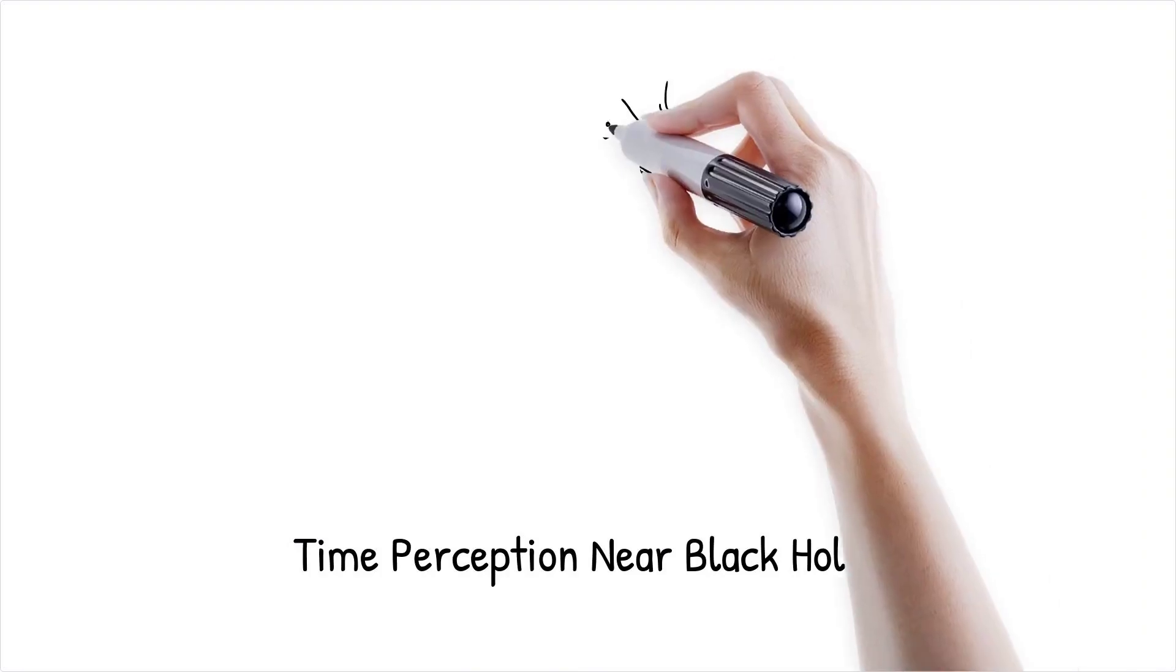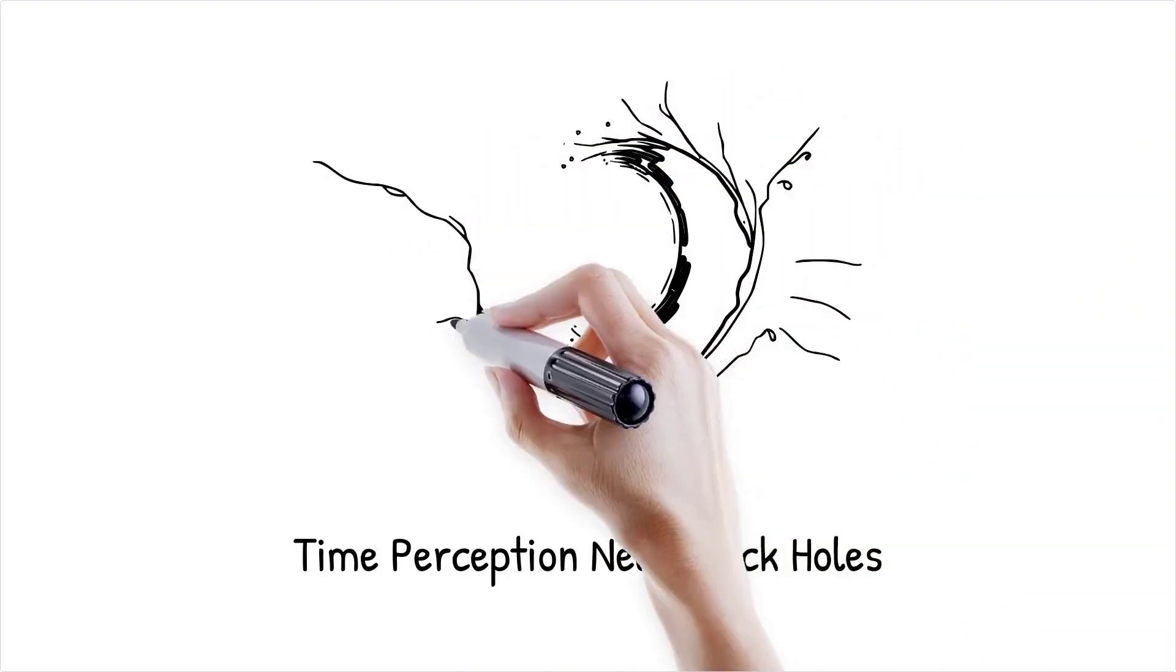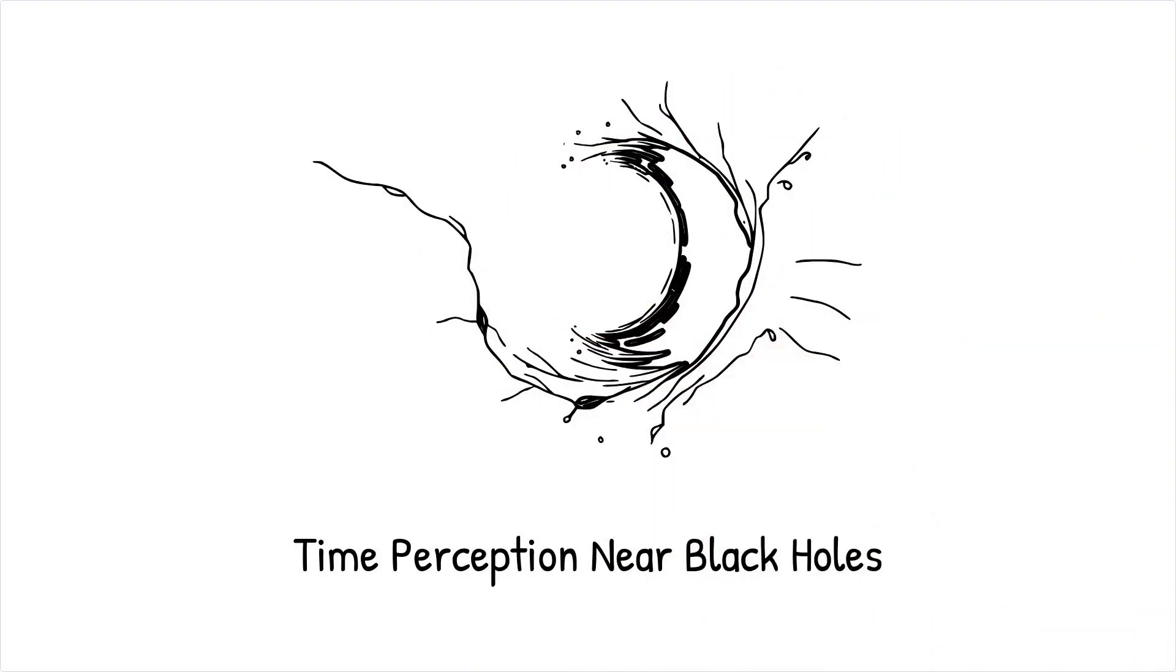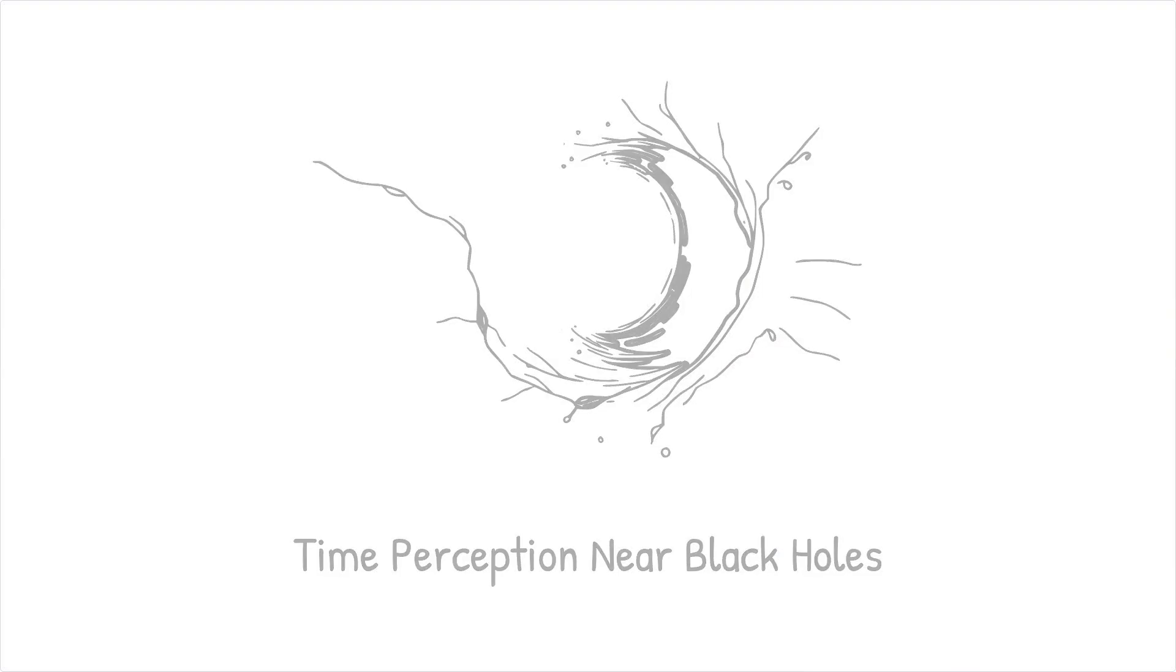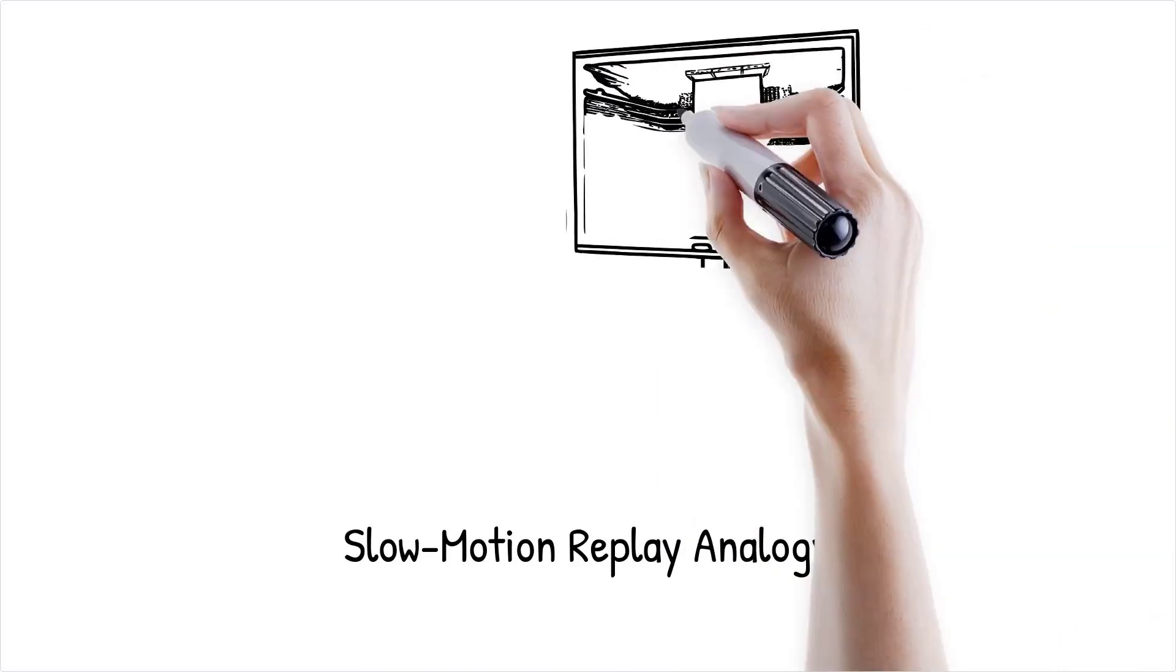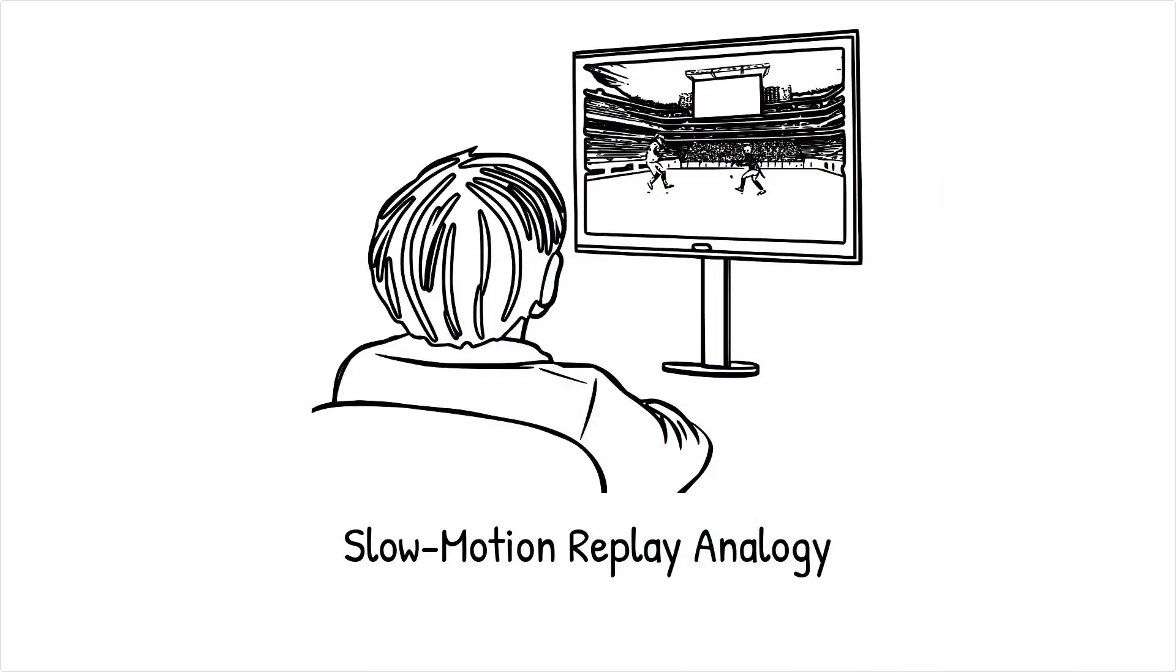For example, in extreme cases such as black hole event horizons, time perception changes so drastically that an external observer sees objects frozen in time while the object itself experiences normal flow. This is like watching a slow-motion replay of a fast event. What looks instantaneous in real time appears stretched out when viewed differently.